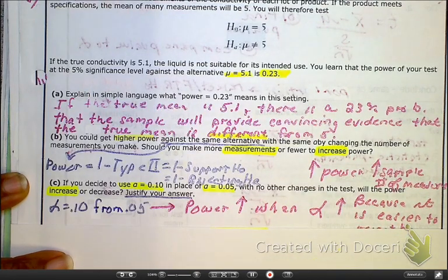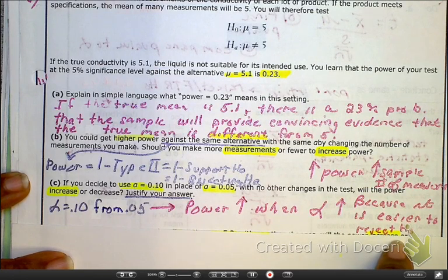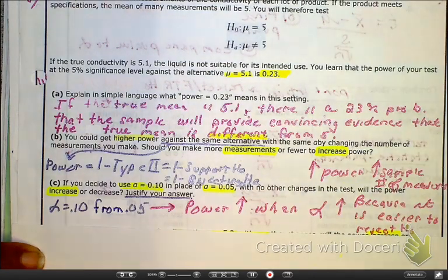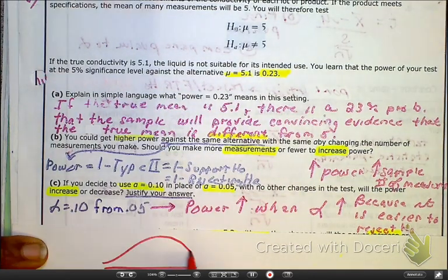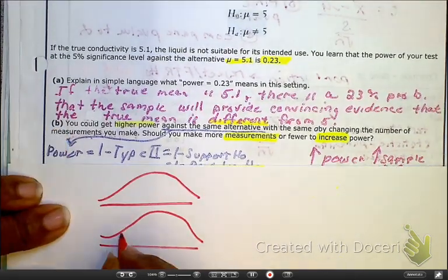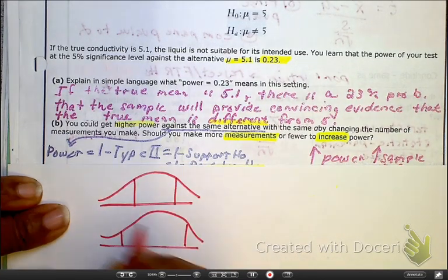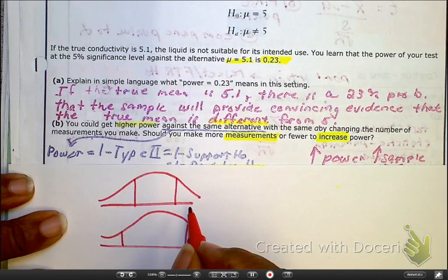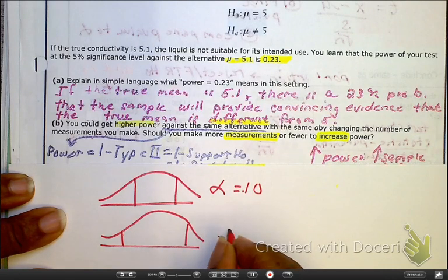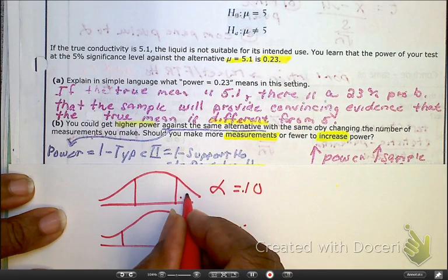Because remember, the whole premise behind increasing the alpha is that it is easier to detect an error. And, as I show you a picture, here is your alpha level from the start. Here is when it was from the new one. So, this is alpha, 10%. This is alpha, 5%. So, as we look here, these tails are bigger.